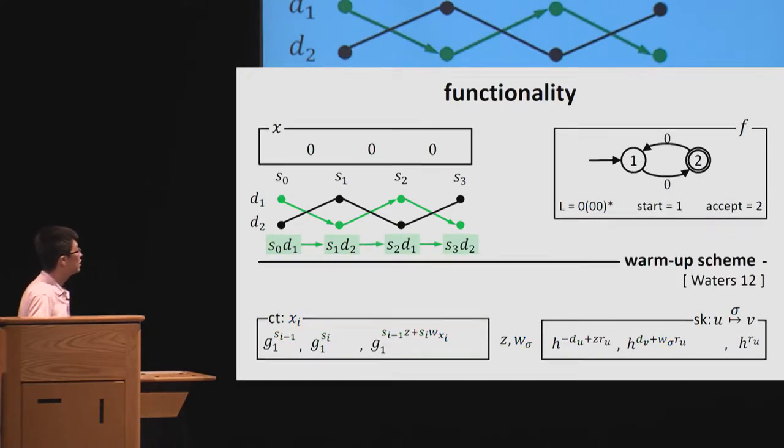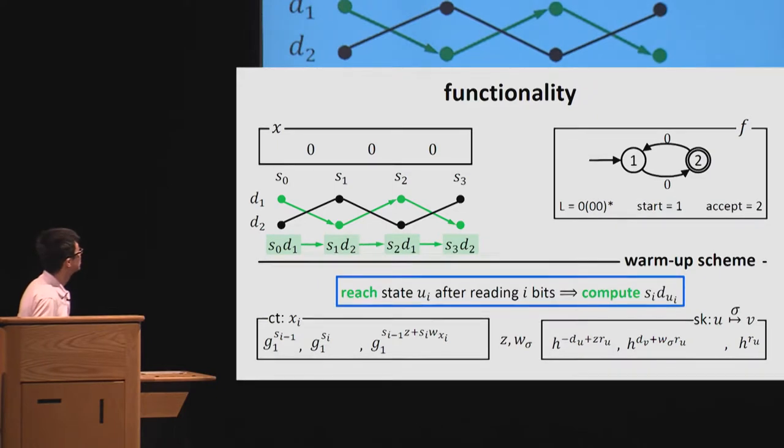So this actually is the structure used in the first ABE for DFA from Waters. We use it, but we need to change the scheme and we work with composite order group and give a different proof. So we call this warmup scheme and tell you what kinds of things we should do. So this is the takeaway for this part.